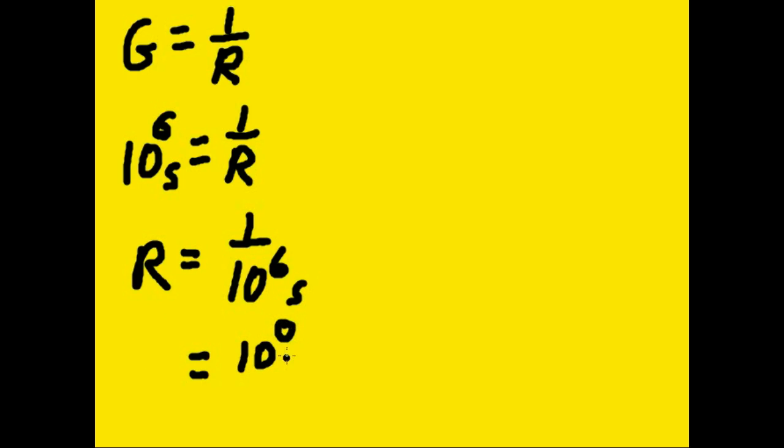Because anything to the zero power is equal to one, and that's over ten to the sixth siemens. And now I can rewrite that again as ten to the zero minus six over ten to the zero.